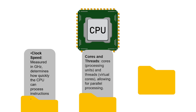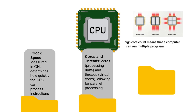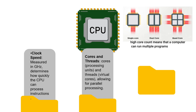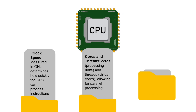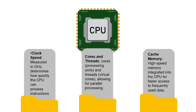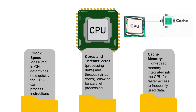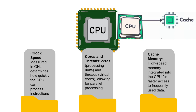Next is cores and threads. Modern CPUs often have multiple cores and threads, allowing for parallel processing. This means that a high core count means a computer can run multiple programs and switch between programs at the same time with little trouble. Last is cache memory, which is high-speed memory integrated into the CPU for faster access to frequently used data. It acts as a temporary storage area that the processor can retrieve data from easily.